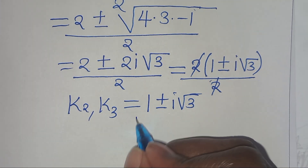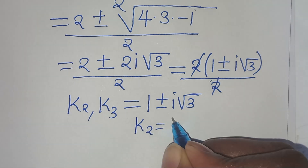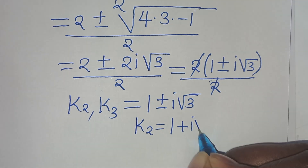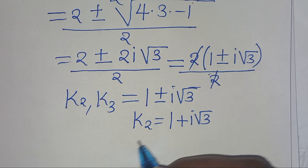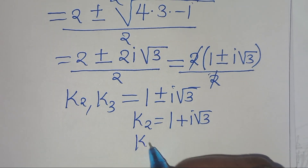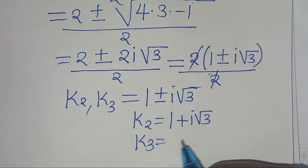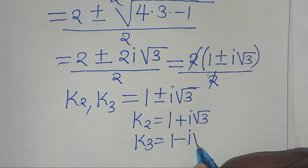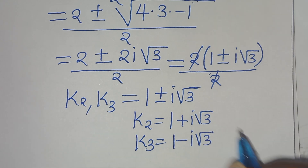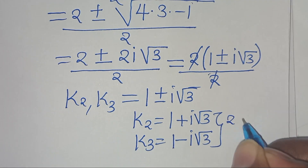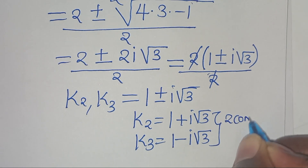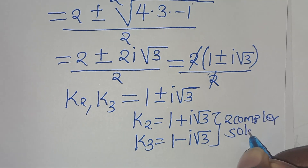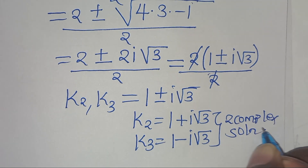So we have k2 equal to 1 plus i square root of 3, and k3 equal to 1 minus i square root of 3. These are two complex solutions under case 1.